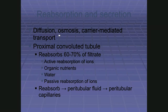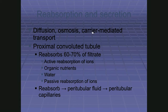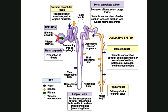At the PCT we reabsorb about two-thirds of the filtrate — all nutrients as much as possible, most ions, and a large amount of water. We're not worried about active versus passive transport here, just that we reabsorb ions, nutrients, and water right at the start. It goes from tubular fluid out to peritubular fluid and then into the paratubular capillaries. After the renal corpuscle, concentration in the tubes is highest, so diffusion naturally pushes things out.